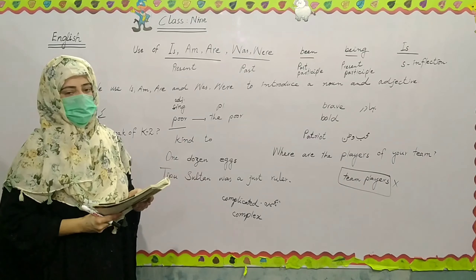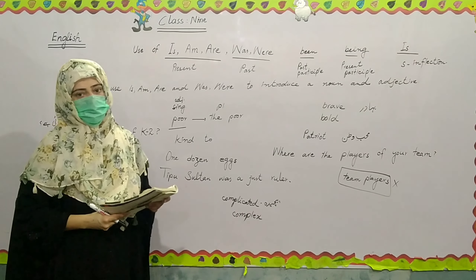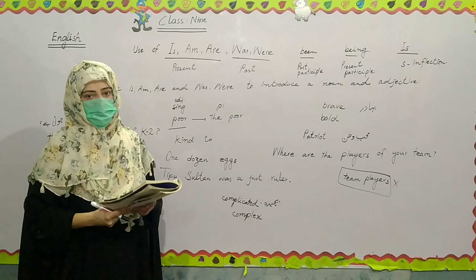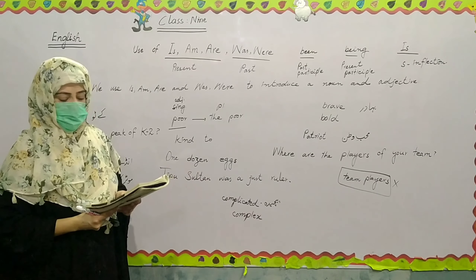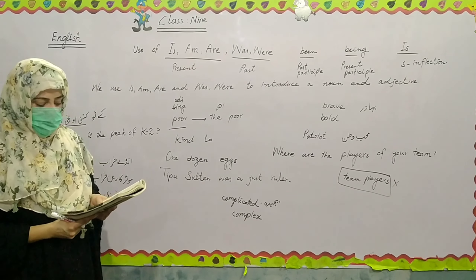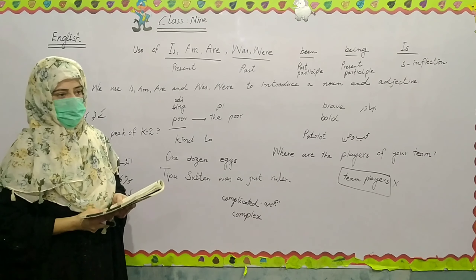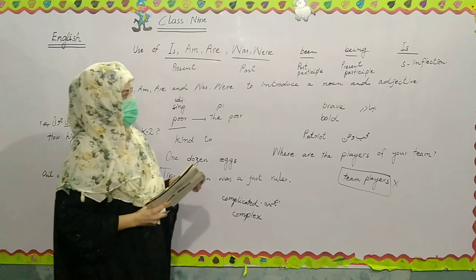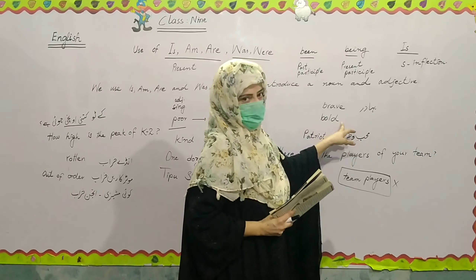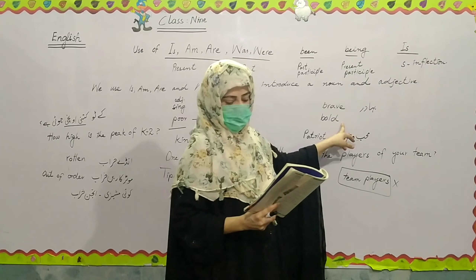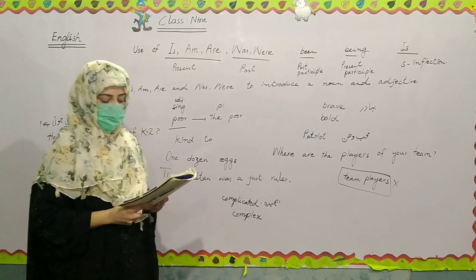Here we are introducing 'the Muslims,' a noun, by using 'are' — We all are Muslims. Ahmed is brave or bold — 'bahadur' means bold or brave, it is an adjective. We are introducing here an adjective: Ahmed is a brave soldier, or a bold soldier.